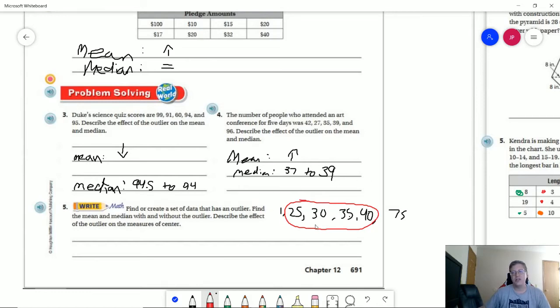If this one didn't exist and we put this in as our outlier then that would increase our mean and then our median would switch to being 35. Because we would go 25, 30, 35.